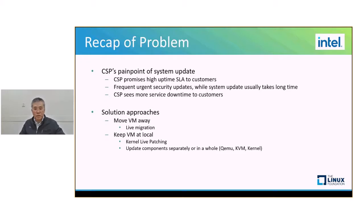The other choice is to keep the VM local. Then an option is live patching the kernel. It is good for small fixes. However, big kernel changes will raise the failure rate. Our focus is the final category: update the relevant components separately or as a whole on the local system. Examples include a proposal from Oracle to do cumulative updates, and there is also a paper which talks about updating the KVM module.